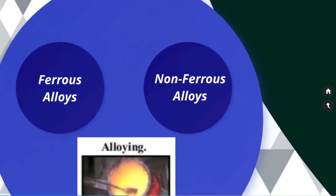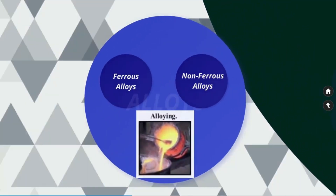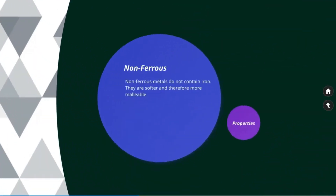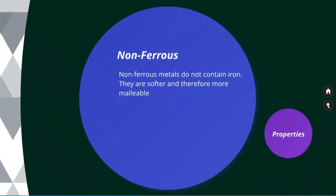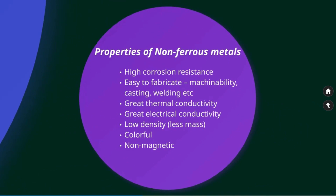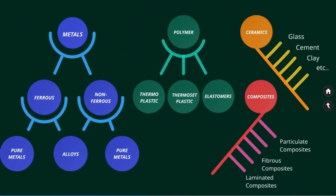Non-ferrous metals: we have already seen non-ferrous metal alloys which don't contain iron. Non-ferrous metals are softer and therefore more malleable. Properties of non-ferrous metals include high corrosion resistance, easy to fabricate, great thermal conductivity, great electrical conductivity, low density, and they are colorful and non-magnetic. Let us see some of the pure non-ferrous metals.